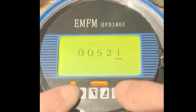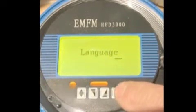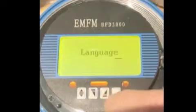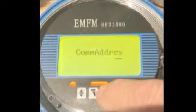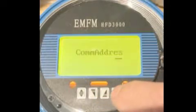We're going to press the two buttons together and it'll now allow us to view the language, which we don't care about, the com address. The language is the first one. The com address is the slave address, slave ID.